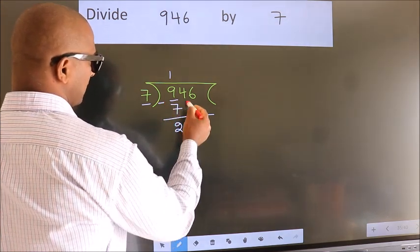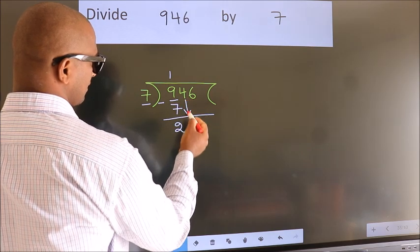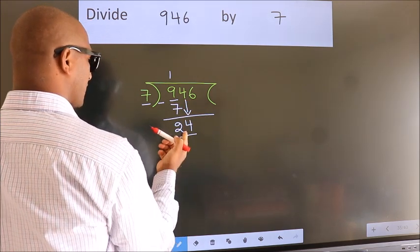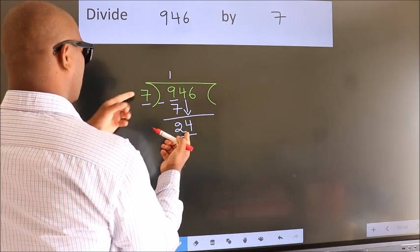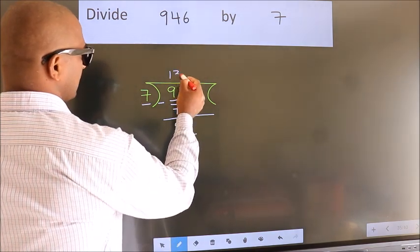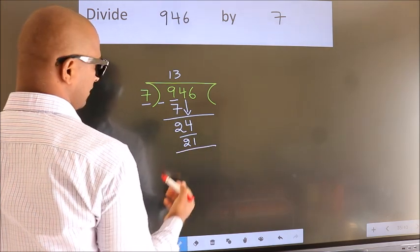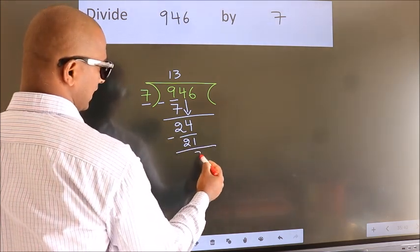After this, bring down the beside number. So 4 down. So 24. A number close to 24 in 7 table is 7 threes, 21. Now we subtract. We get 3.